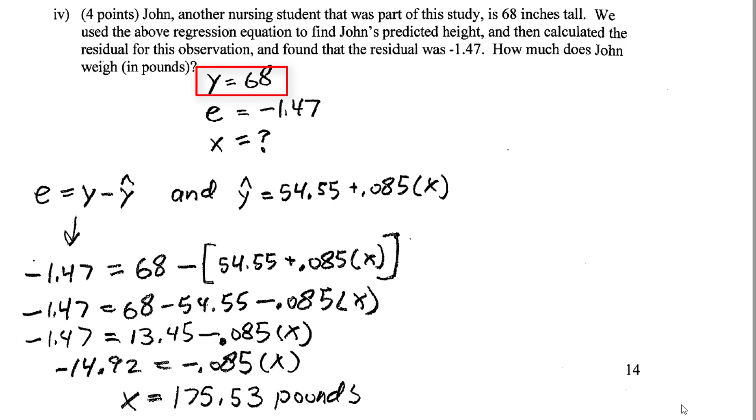We use the regression equation to predict his height—that's ŷ. We don't know his ŷ yet. Calculating the residual, we get -1.47. This is e, his residual. Now we want to know John's weight in pounds.